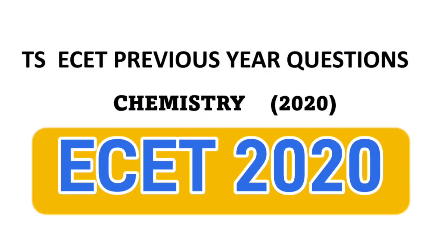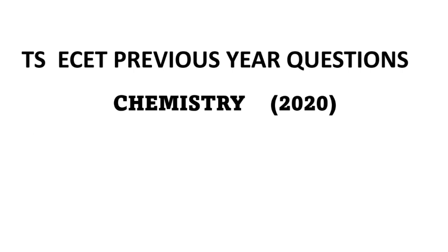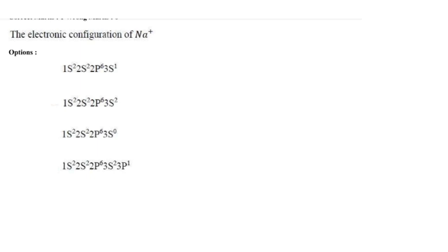Hello everyone, today we will discuss the TSE set previous year questions of chemistry which came in 2020. The first question is the electronic configuration of Na⁺, and the options were: 1s² 2s² 2p⁶ 3s¹, and 1s² 2s² 2p⁶.